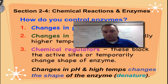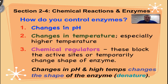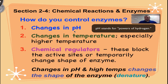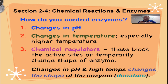Enzymes can be controlled three different ways. One of them is changes in pH. If you remember, pH is a measure of how many hydrogen ions are concentrated in a solution. A pH of 7 is neutral. pHs below 7 are acids, and pHs above 7 are bases. The farther you move away from 7, the stronger you get.